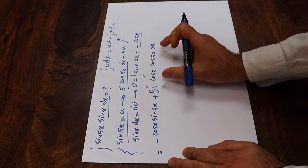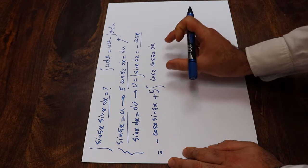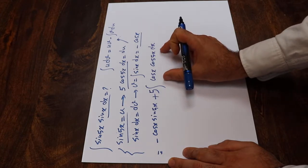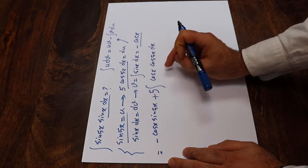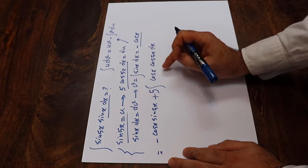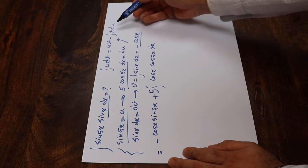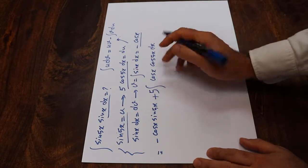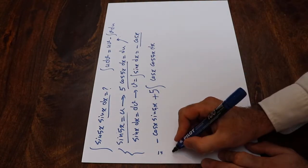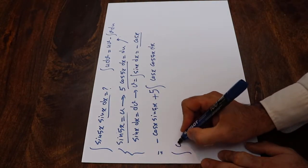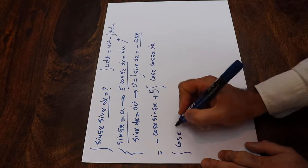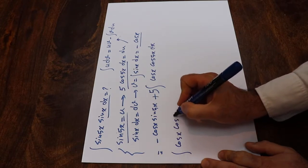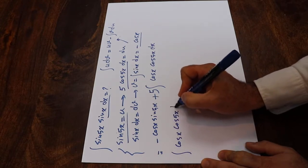So now you need to calculate this integral. And this integral you can solve using the formula for integration by parts one more time. So let's calculate the integral of cosine x cosine 5x dx.